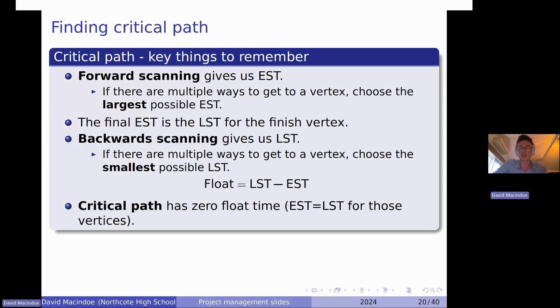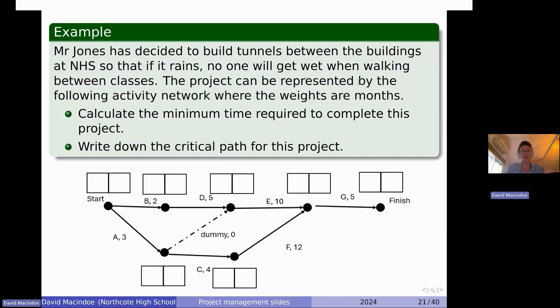Okay, let's do one. I think this is really the critical way to learn this stuff. So we've got here the principal at a school is building tunnels between buildings so that if it rains, no one gets wet. We can represent this as an activity network. First, it asks us to calculate the minimum time required to complete this project. So that's going to be the EST, the earliest start time for the finish. Once we're at the finish, we're done. So let's just kind of work along. At the start in this leftmost box, we just put zero. And as we go along this edge here, duration of two, so we're adding that onto the EST for the start.